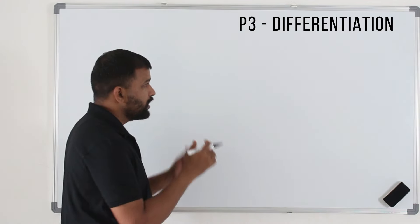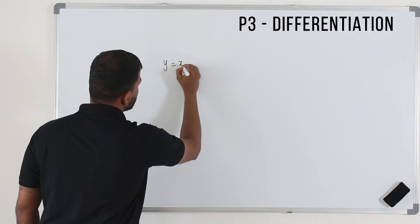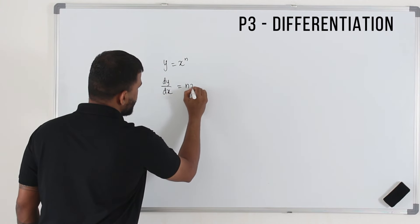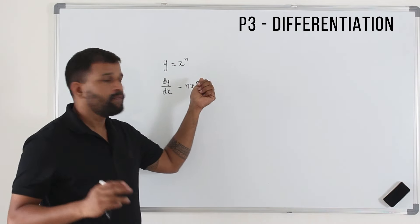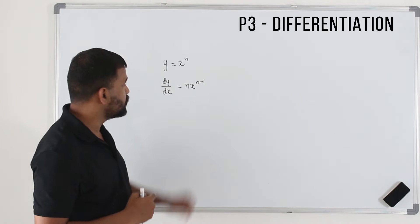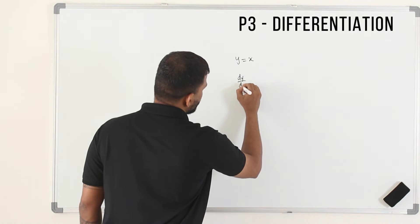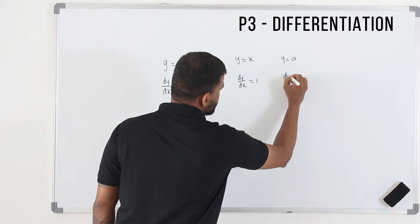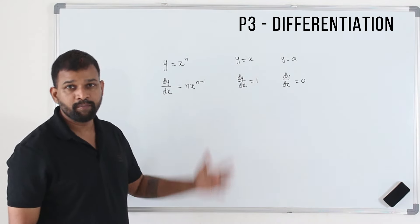In P1 and P2, we learned only a sweet and simple derivative rule. When you have x power n, the derivative of y with respect to x is nx power n minus 1. That's the only rule we learned. You can apply this rule for any power — the power can be positive, negative, fraction, negative fraction, or anything. And if you have just x, the derivative of y with respect to x is 1. If you have a term independent of x, the derivative is 0.